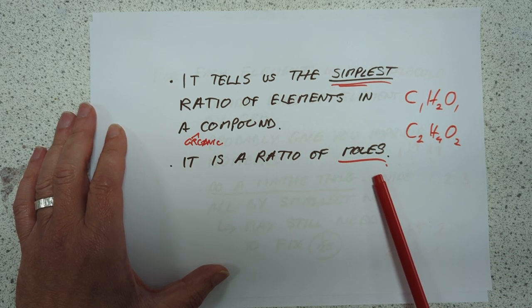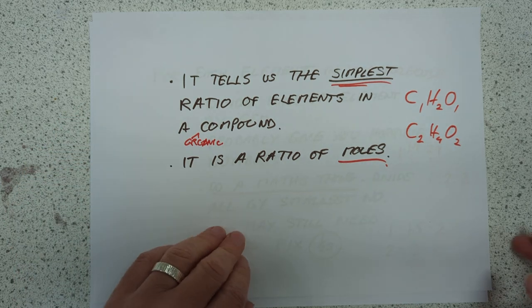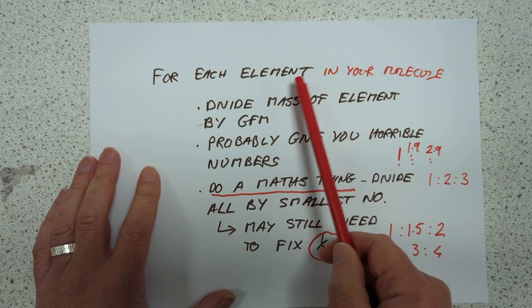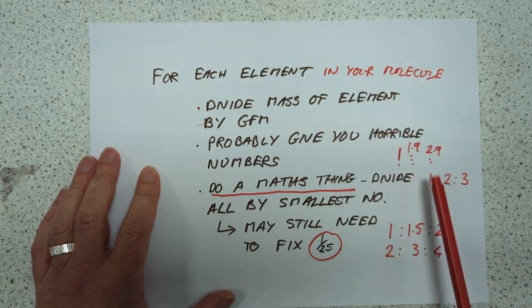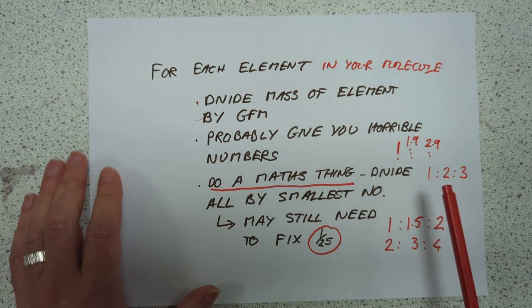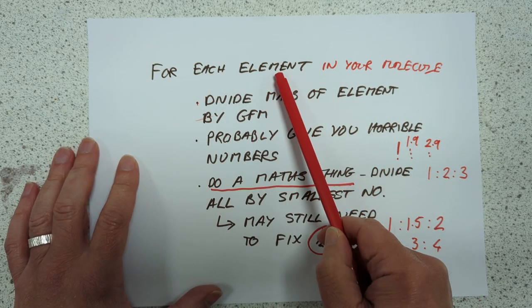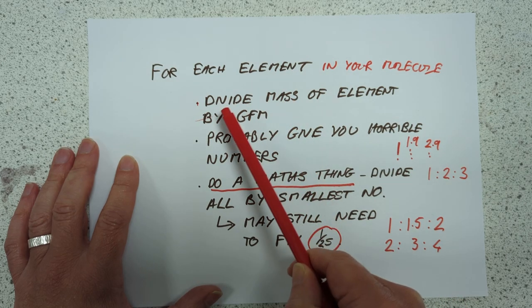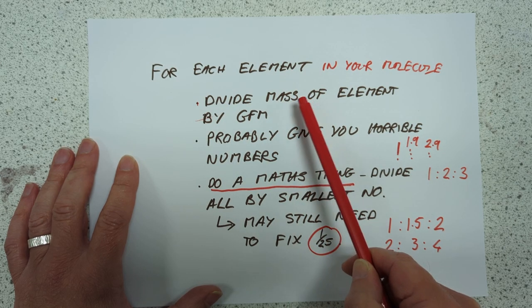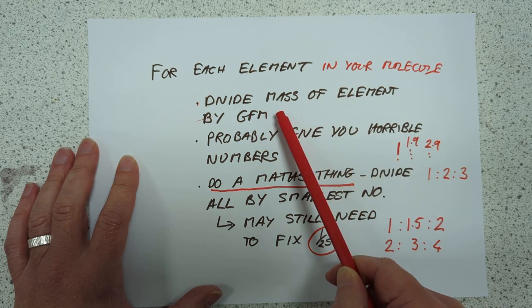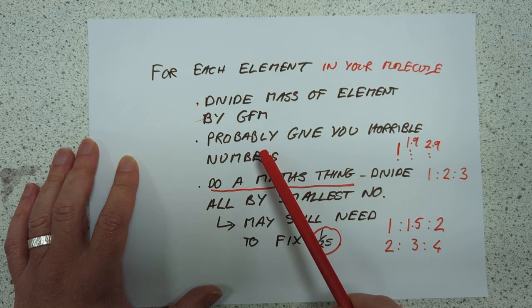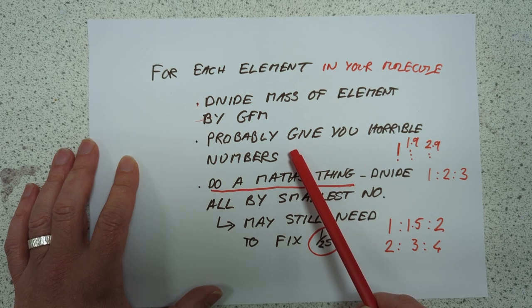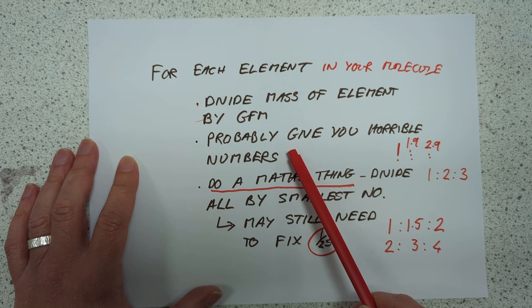It's a ratio of moles in the organic molecule, so how do we calculate it? Here's how we calculate it. For each element in your molecule, sorry about the red writing, this was in my Mark 1 video. So for each element, you divide the mass of the element by the GFM of the element. Do that for, there's usually like 3 different elements, carbon, sulfur and oxygen or whatever. So do that for each of your elements and you will probably get a horrible set of numbers.